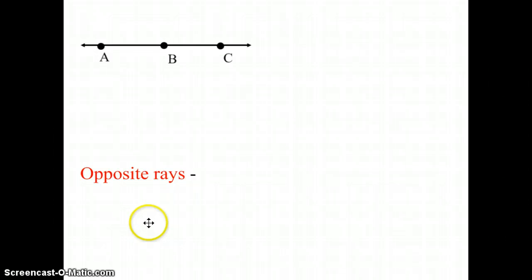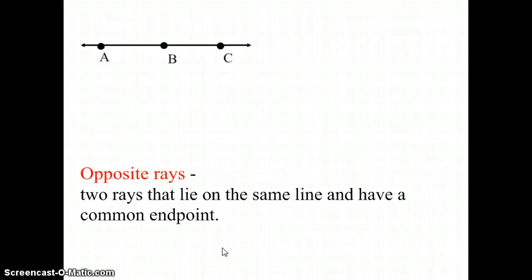The last kind of definition that we have is opposite rays. Opposite rays are two rays that lie on the same line and have a common endpoint.